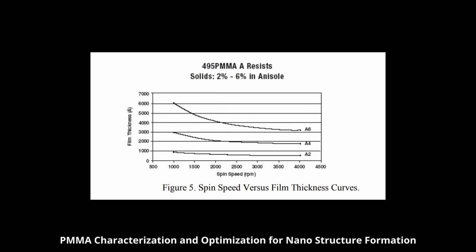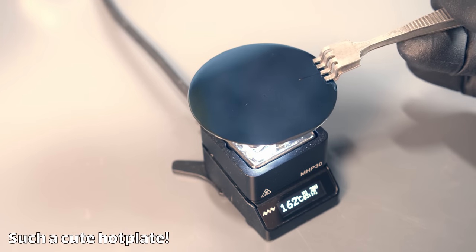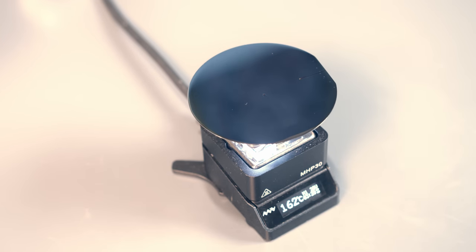PMMA is one of the classic resists for electron beam lithography. It's cheap and easy, has a really wide process range — you can spin it down to just tens of nanometers or build up layers a couple microns thick. It's moderately sensitive with decent contrast, and it's just in a sweet spot of being easy to work with. After spinning the resist on, you bake it on a hot plate for a couple minutes at 150–160°C to flash off any remaining solvent.